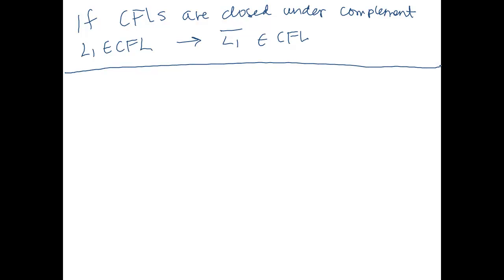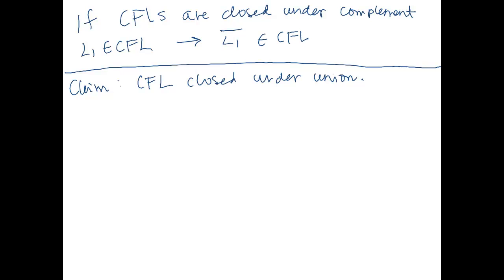In order to determine whether the context-free languages are closed under complement, we find it helpful to first show that the context-free languages are closed under union. The claim is that context-free languages are closed under union. We're going to give two very quick proofs that this is true, mainly to prove closure under union but also to give a little more practice doing proofs of this sort. This is proof 1.